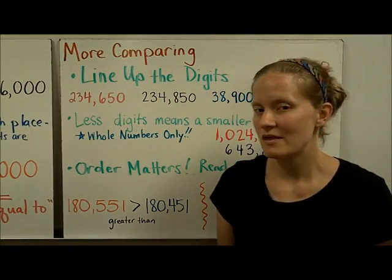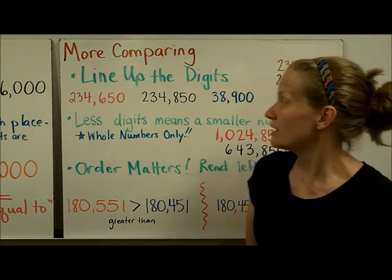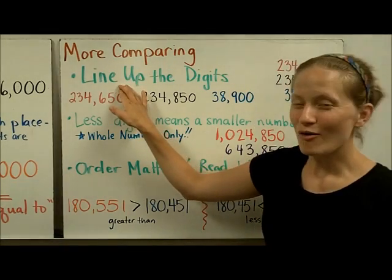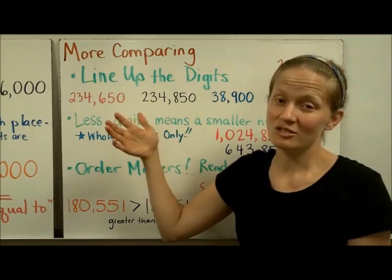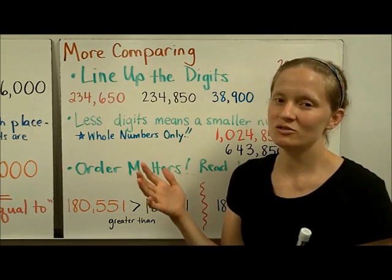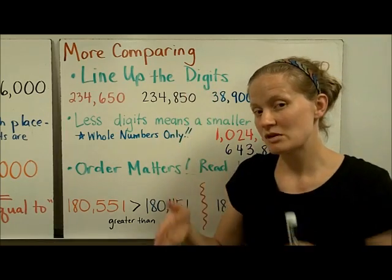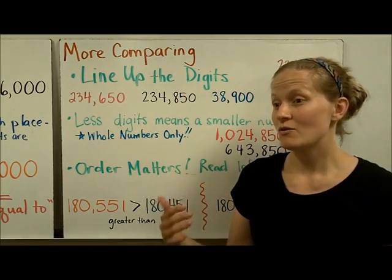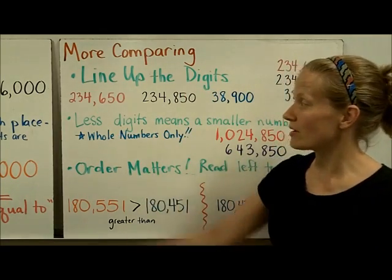Here's a few more notes as you compare numbers that you'll want to keep in mind. It might be helpful to you to line up the digits when you are comparing numbers. Sometimes you'll get so many numbers at once that you're comparing that if you'll put them vertically instead of horizontally, you'll be able to easily and quickly compare them.